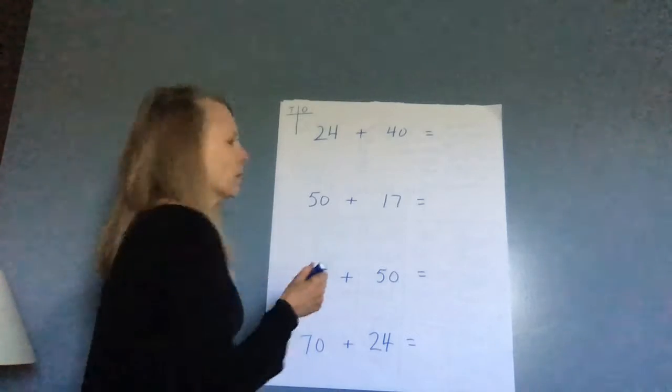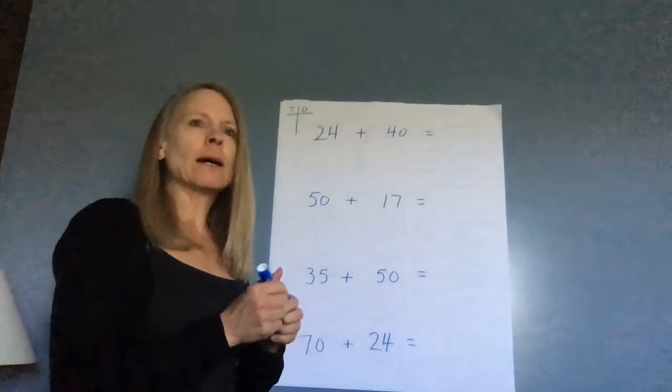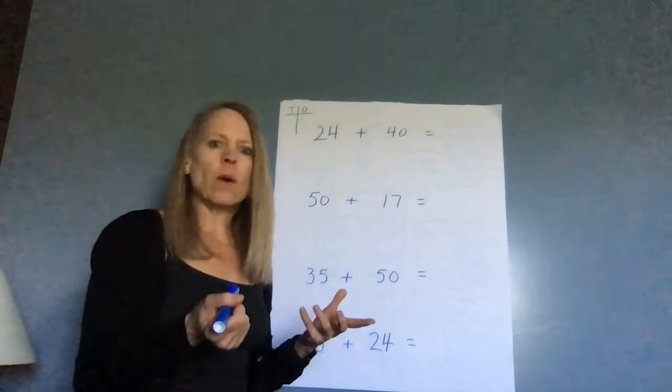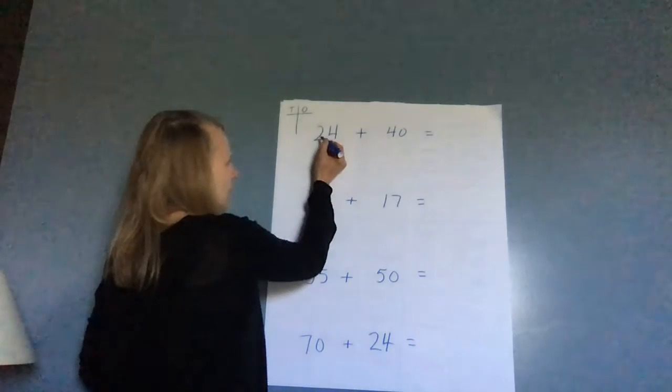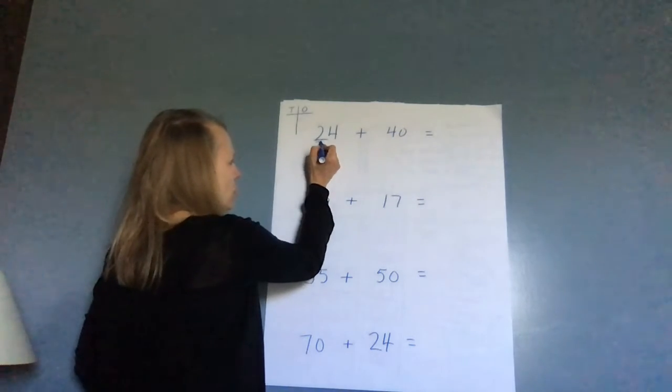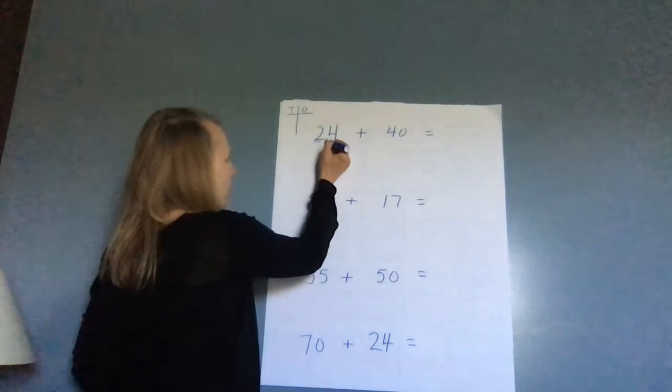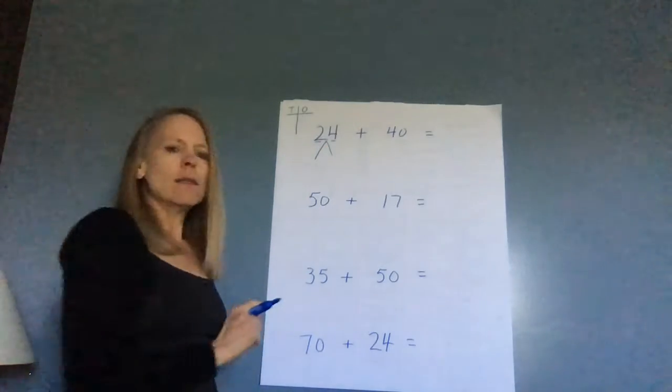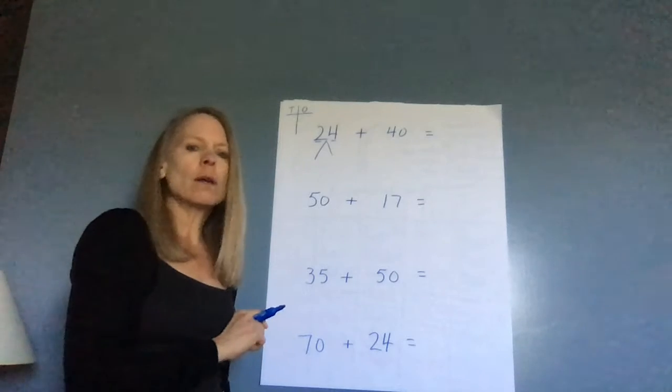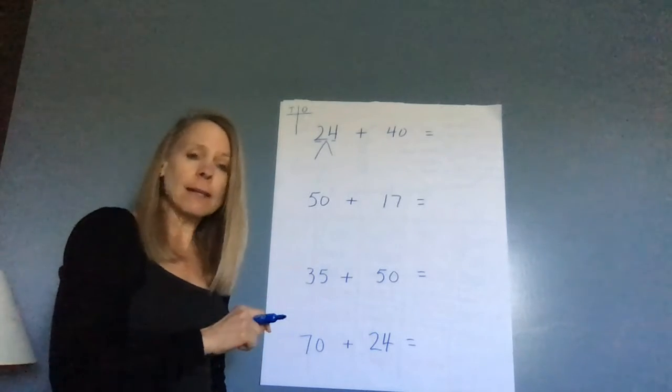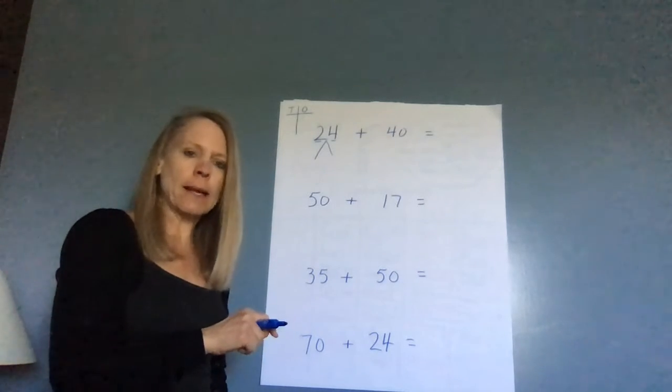We have been talking about number bonds for quite a bit of time. If I look at this 24, I know that there is a two and a four. If I break it apart, there's a two in the tens place.